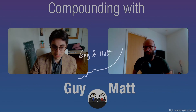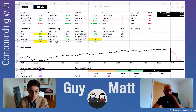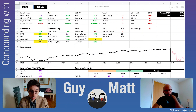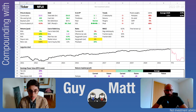Hi compounders, time for another stock analysis. Today we want to cover Netflix — NFLX. I used to have a subscription but I don't anymore. The current price is $240 per share. There are almost half a billion shares outstanding, and they have $6 billion in cash and $14.5 billion in total debt, which is usually something we don't like.